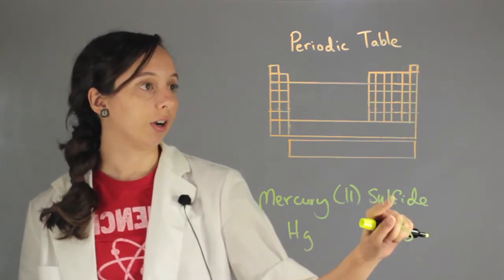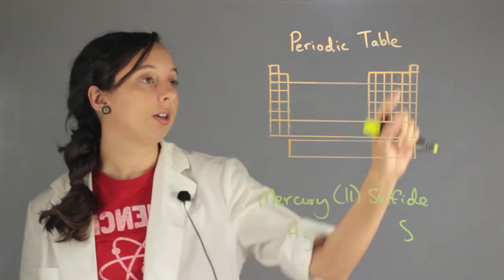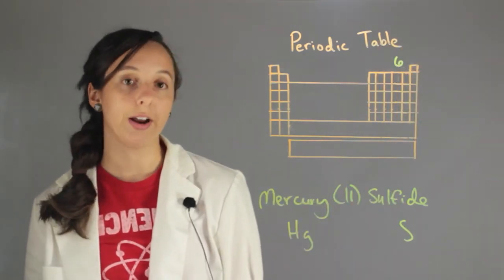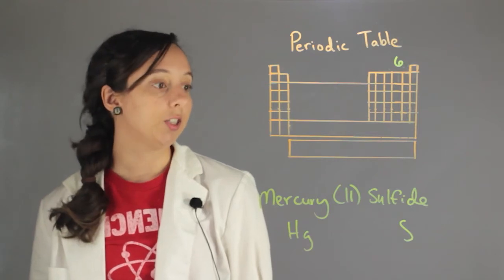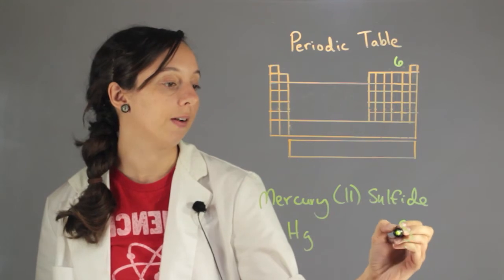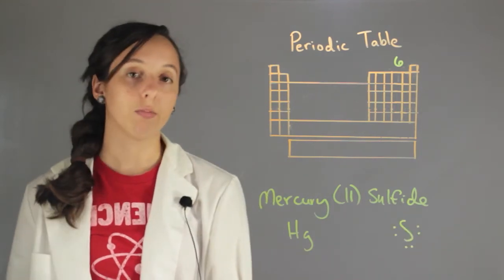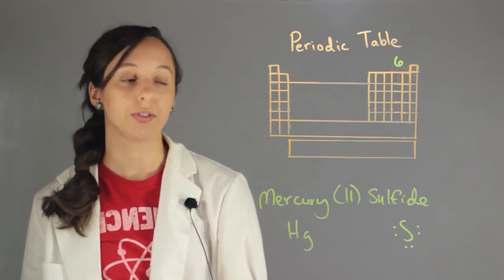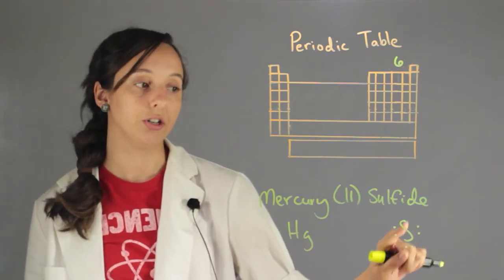So sulfur is in group six of the periodic table, right here, right under oxygen. And this means that this has six valence electrons: one, two, three, four, five, six. And remember that each atom wants to have a total of eight valence electrons. So sulfur is really looking to gain two electrons.